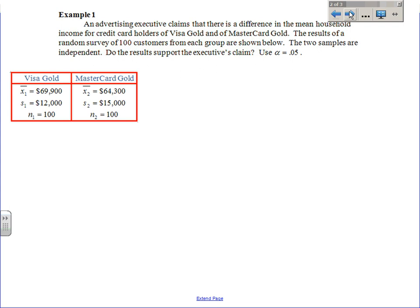Might as well just dive in and try one and see if we can figure out where everything fits in here. So there's an executive out there that claims that there is a difference in the mean household income for credit card holders of Visa Gold versus MasterCard Gold. The results of a random survey of 100 customers from each group are shown. Two samples are independent. It was actually pretty important for them to say that because some people would say, well aren't they independent anyways? Could you have both a MasterCard Gold and a Visa Gold? You could have both, right? And according to this, do you think that they asked those particular people that had both? They stayed away from that idea.